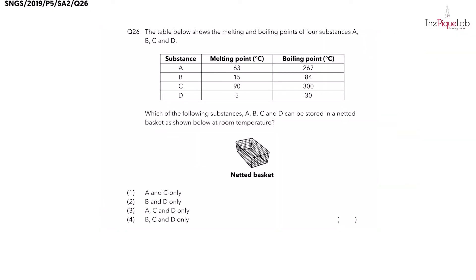Question 26: the table below shows the melting and boiling points of four substances A to D. For questions involving melting and boiling points, we can draw a number line like this, and I'm going to indicate the melting point and the boiling point on the number line.